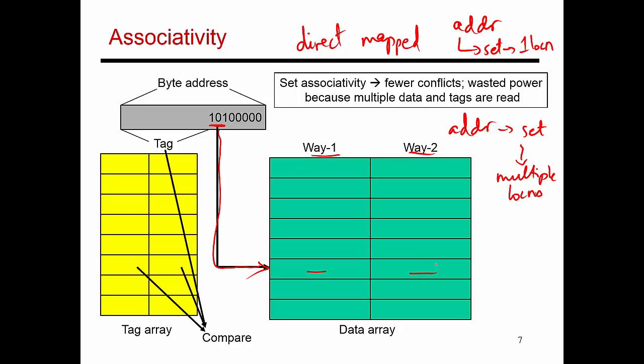Correspondingly, my tag array also is going to have two ways. There's going to be a tag for whatever block is sitting here, and there's going to be a tag for whatever block is sitting here.